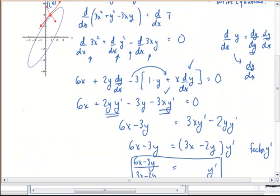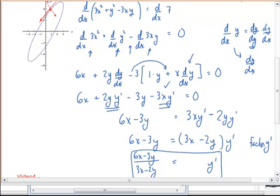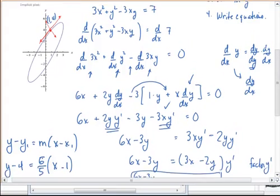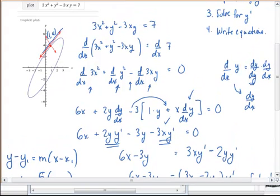So when we write our equation of our tangent line, y minus y1 equals m times x minus x1. We plug in our 4 for y1, our 6 over 5 and x minus 1. And when you look at the equation just to check, that does have a slope that's positive.